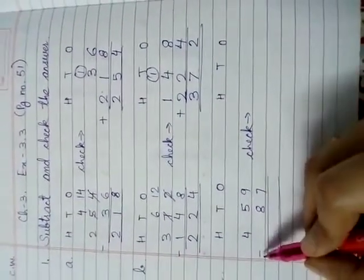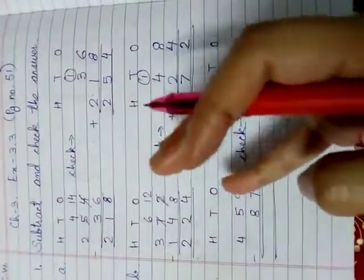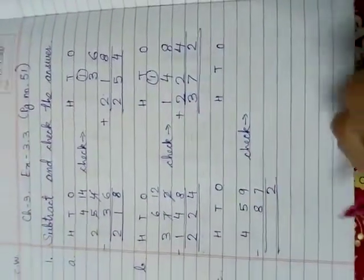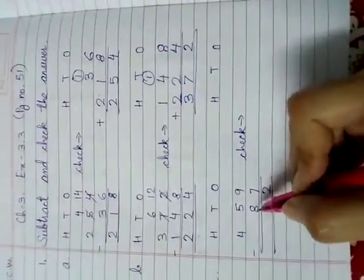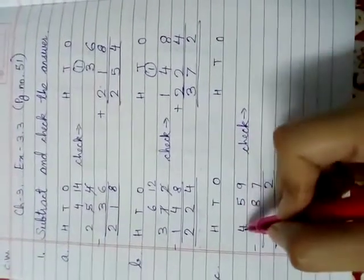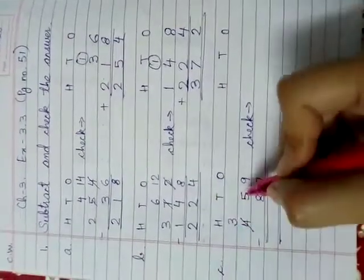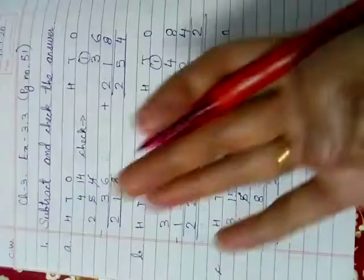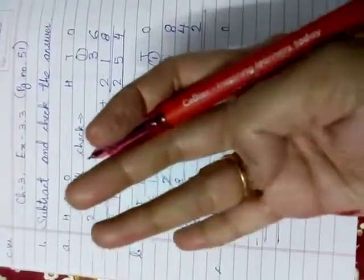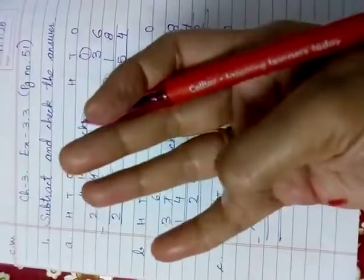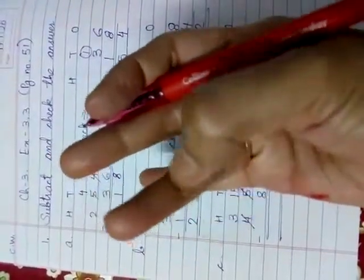9 minus 7. After 7, count till 9. 8, 9. So, 2 is the remaining. 5 minus 8. No. A bigger number cannot be subtracted from a smaller number. So, 5 will take the borrowing from 4. 4 will become 3. 5 will become 15. 15 minus 8. Count after 8 till 15. 9, 10, 11, 12, 13, 14, 15. So, here is the number. 1, 2, 3, 4, 5, 6, 7. 7 is the number.